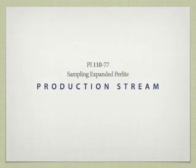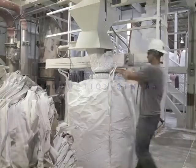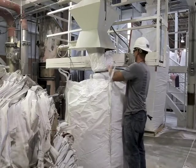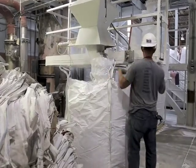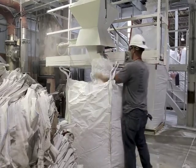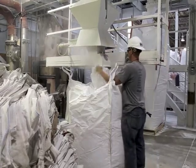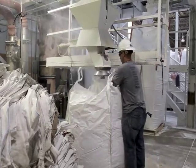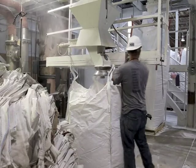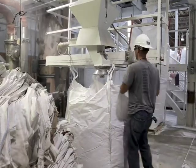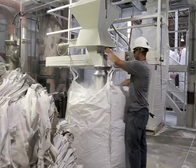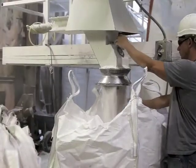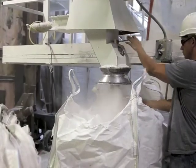A grab sample can be taken by holding a bucket in the production stream. Care should be exercised that the container is passed across the entire stream or flow so that it is not overflowing. Then proceed to split the sample as per PI112. Unless otherwise specified, the frequency of such sampling is a matter of individual choice.